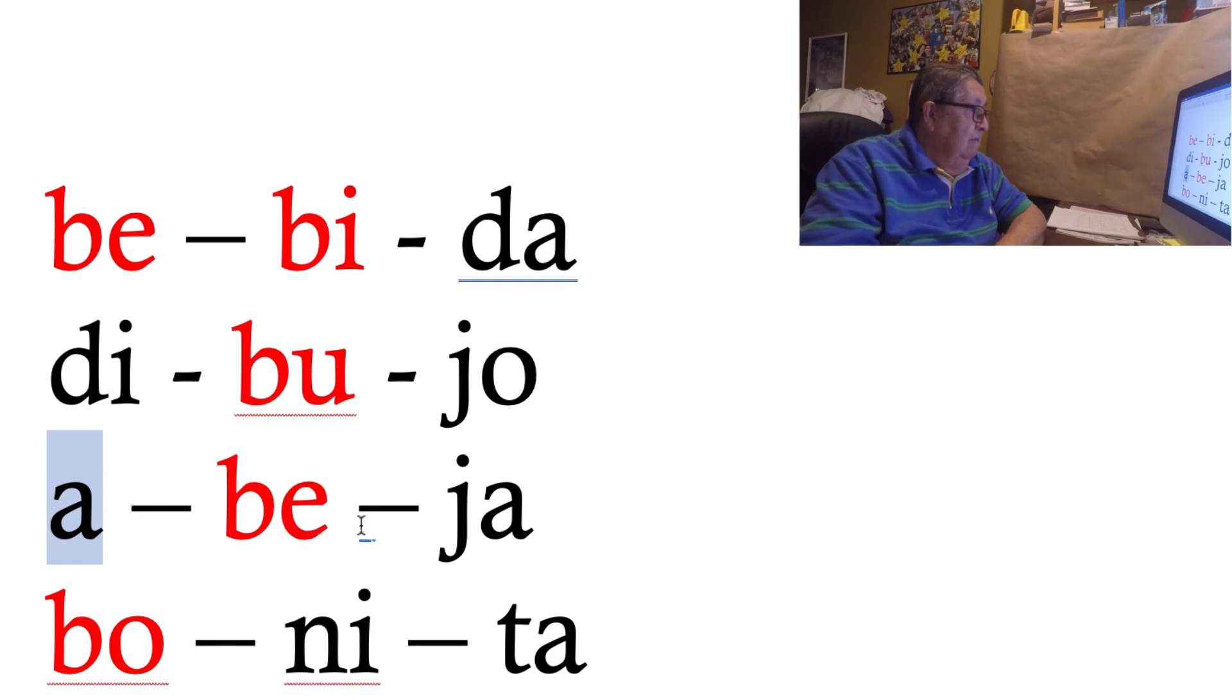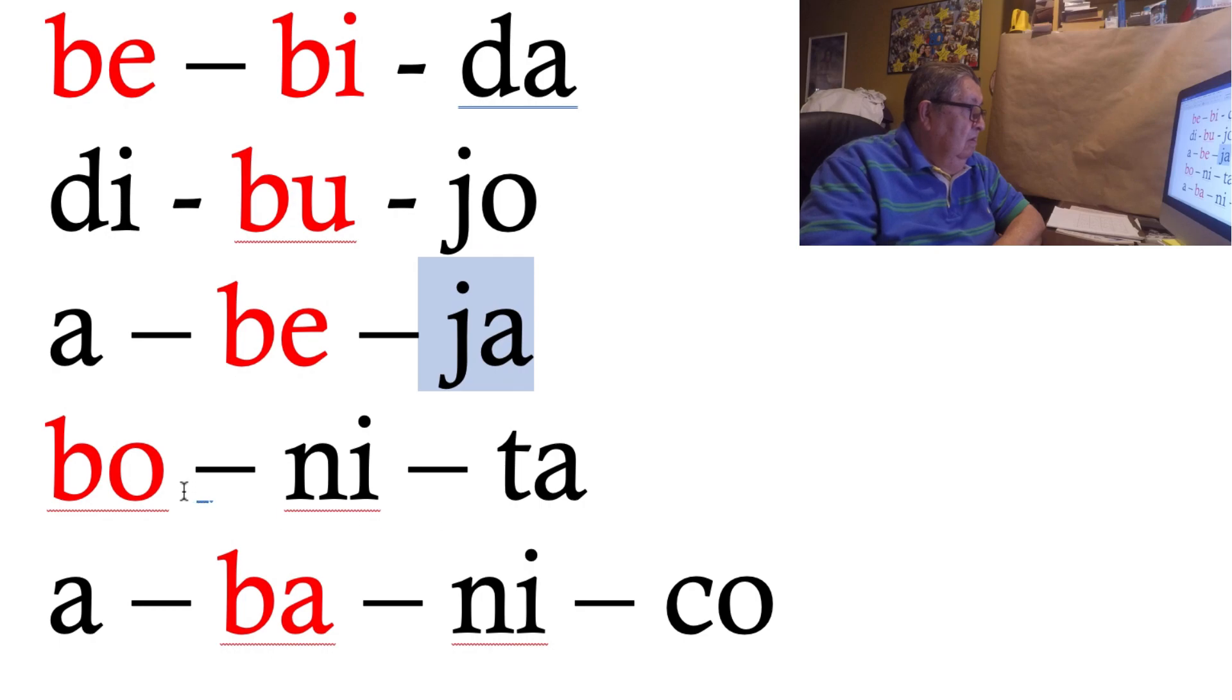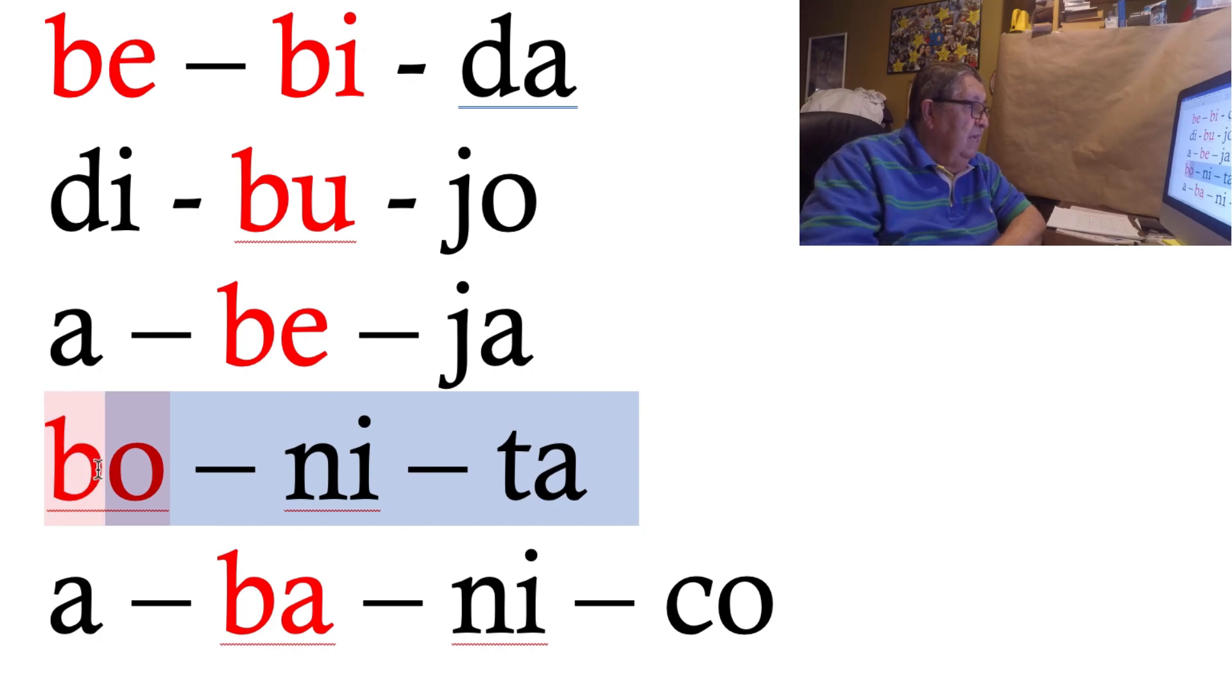A, be, ja. Junto, abeja. Bo, ni, ta. Lo ponemos todo junto y sería bonita. Una niña bonita.